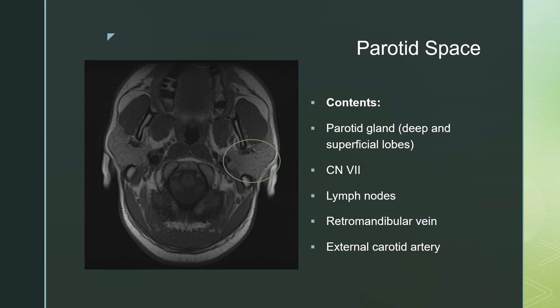The parotid space contains the parotid gland — both the deep and superficial lobes, which are divided by the retromandibular vein. You have cranial nerve 7 and its branches within and around the parotid gland. You have lymph nodes within and around the parotid gland, as well as the retromandibular vein and the external carotid artery.